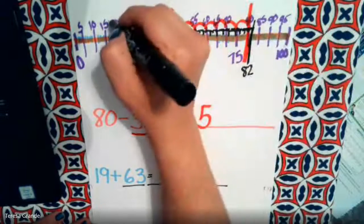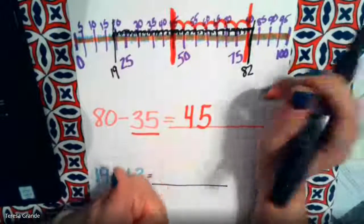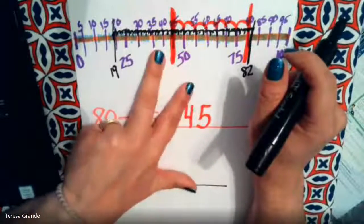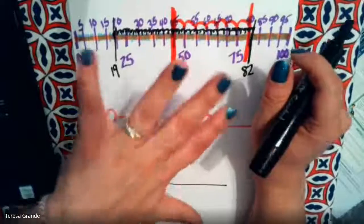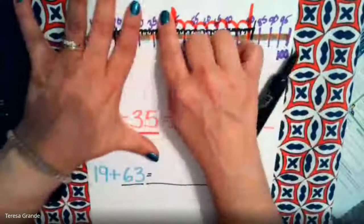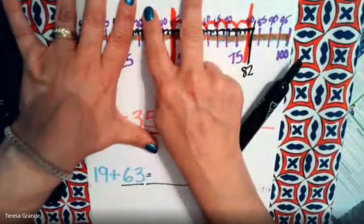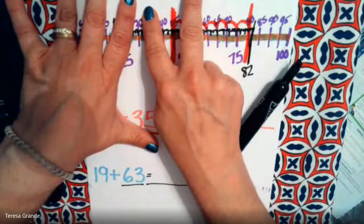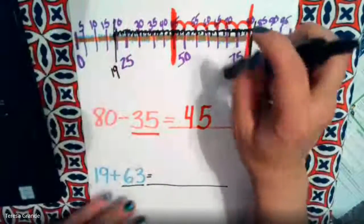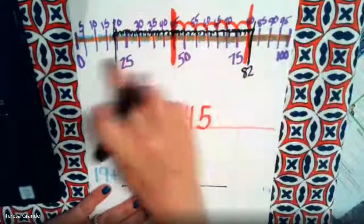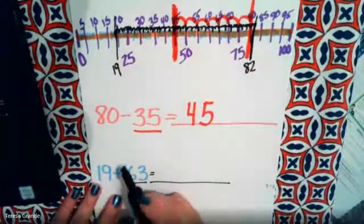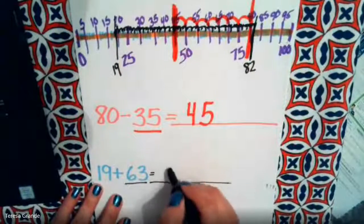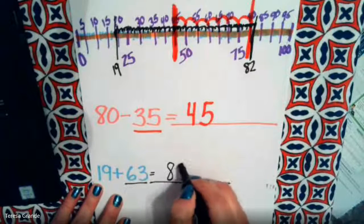You could count by tens and do 19, 29, 39, 49, 59, 69, 79, count by tens. Or you could just count by ones. So we know that 19 plus 63 is 82.